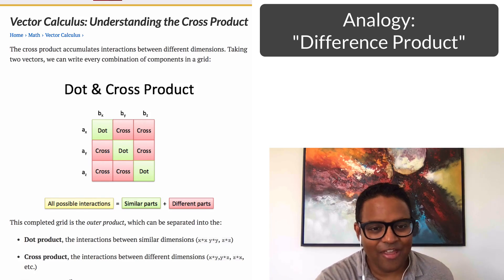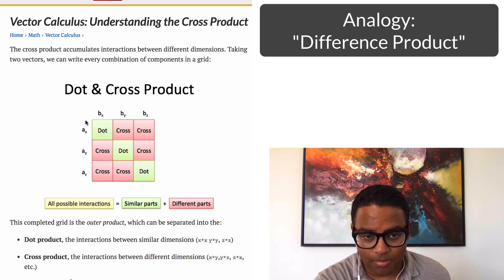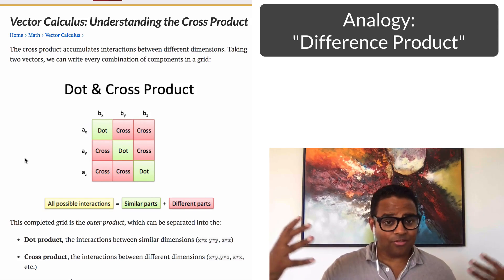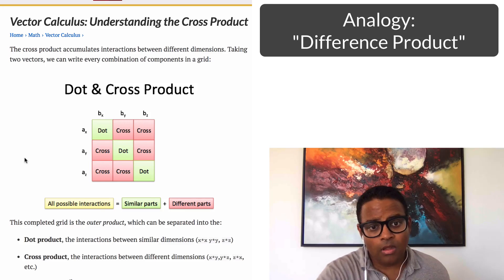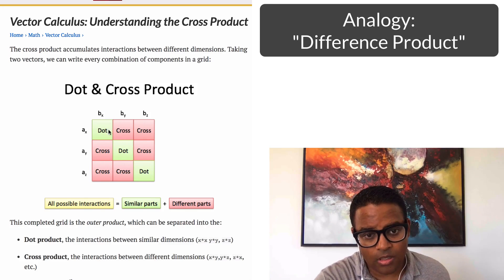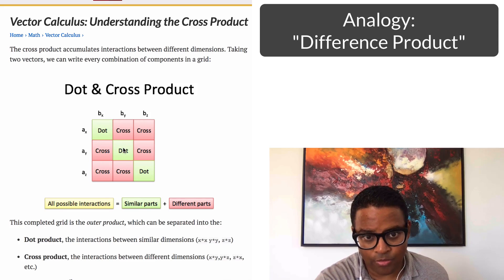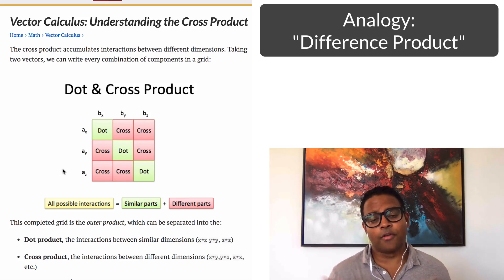The way I think about it is: if you have two vectors A and B, and they have components — there's an X, Y, and Z component on each — let's try to mix every possible component. The components that are in common are the dot product: X with X, Y with Y, Z with Z. The components that are different are the cross product.